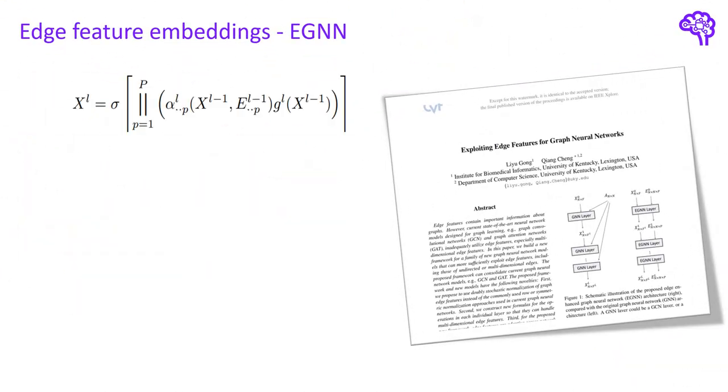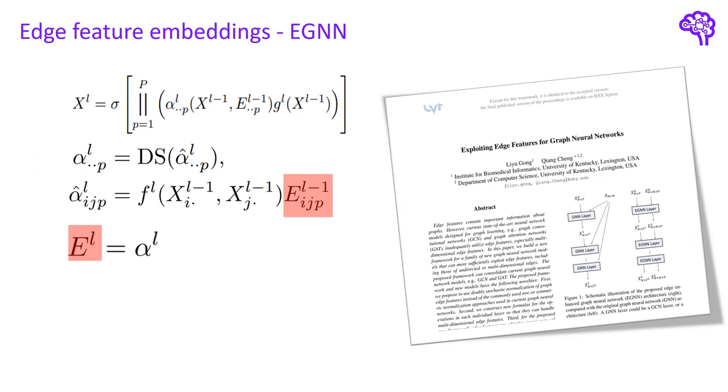Similarly as the previous paper, this approach now also incorporates the edge features when calculating the attention coefficients. Here only one layer is required as both the node and edge embeddings are updated simultaneously. The edge embeddings are simply set to the calculated attention coefficients alpha.